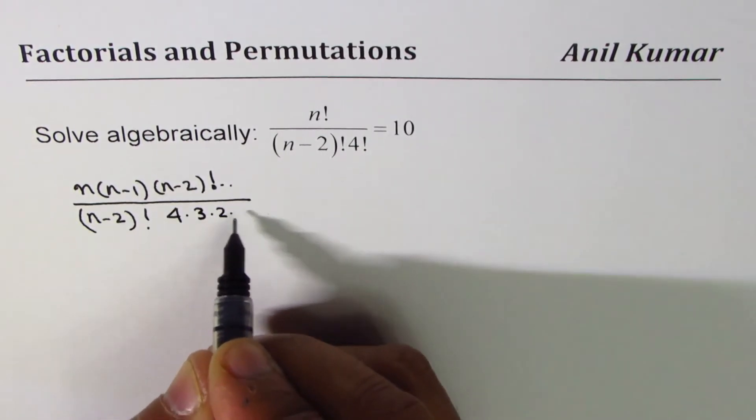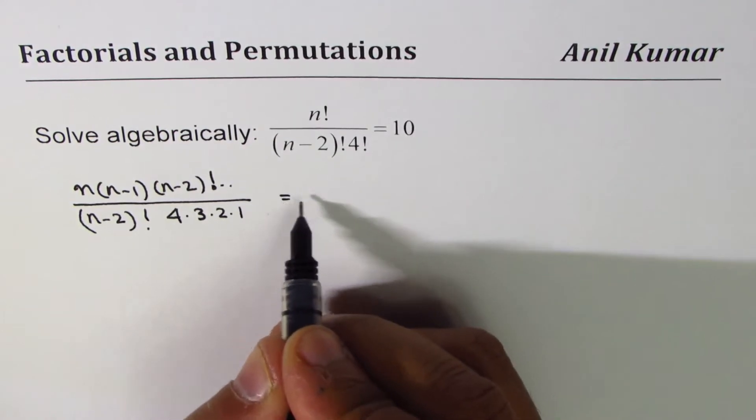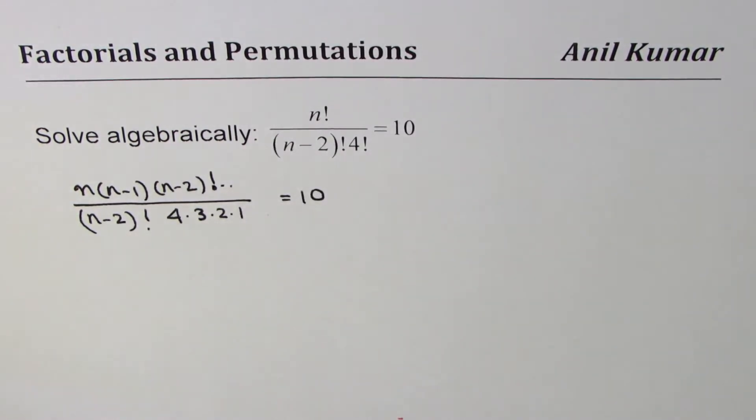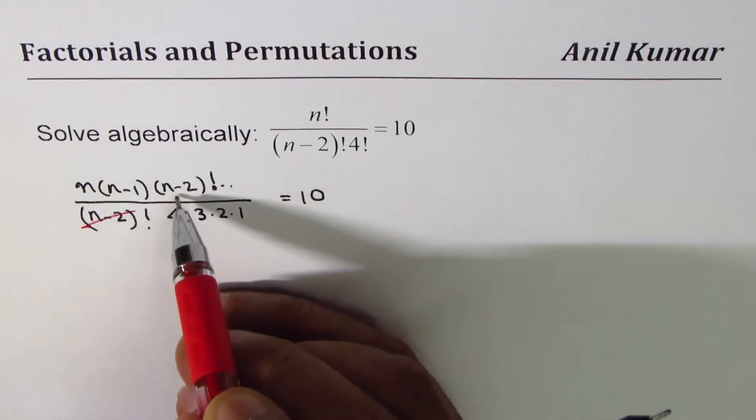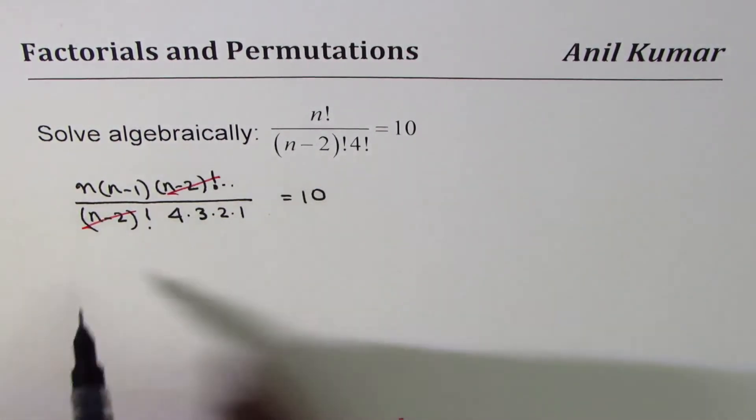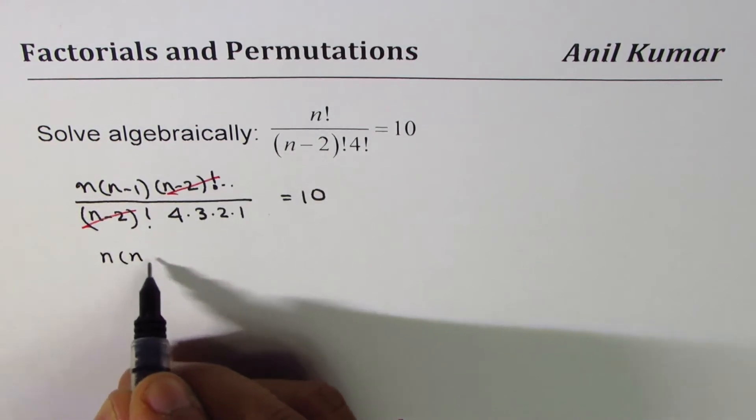That is how we can expand it. And now (n minus 2) factorial cancels, so we have n times (n minus 1) equal to 10 times 4 times 3 times 2 times 1.